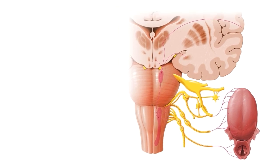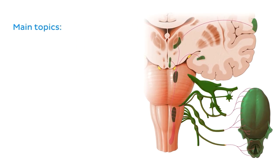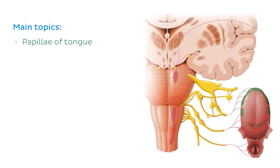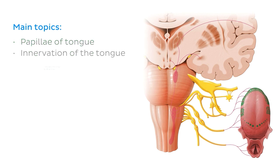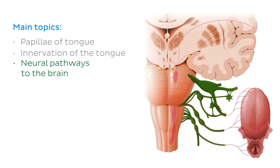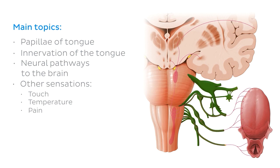The main topics we'll be discussing today are the papillae of the tongue, the innervation of the tongue, and the neural pathways to the brain. We'll also be looking at the roles of the other sensations of touch, temperature and pain, and smell with regards to how we taste our food. And towards the end of the tutorial, you can look forward to the presentation of a clinical condition called dysgeusia.